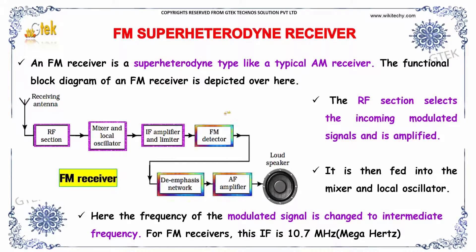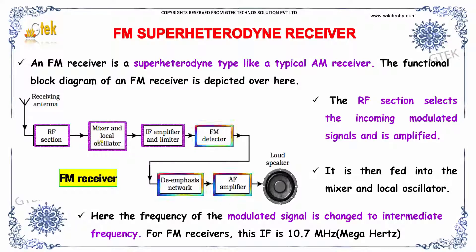The RF section selects the incoming modulated signals and amplifies them. The signal is then fed into the mixer and local oscillator, where the frequency of the modulated signal is changed to an intermediate frequency. For FM receivers, this intermediate frequency is 10.7 MHz.